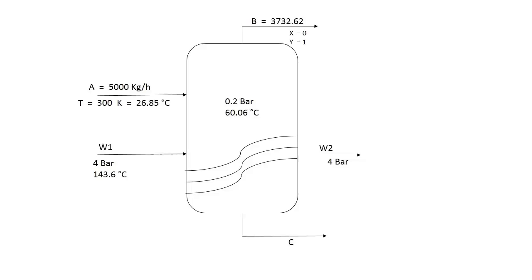For inciso F: suppose a single evaporator is used, operating at 0.2 bar. Calculate the saturated steam feed rate at 4 bar required to achieve the same pure water production rate.